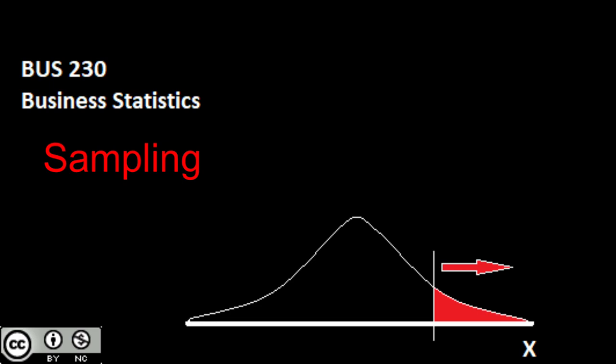What we'll finish off with in this video is the idea of sampling error — because we're pulling from a sample, every sample we pull from the population is unique and gives us insight into the population, but there's likely some error in this insight. In the next video, we'll look at the central limit theorem, a really powerful theorem in statistics that lets us take advantage of the normal distribution.